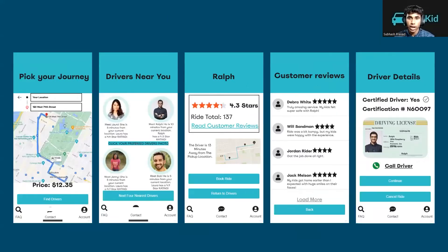When booking a ride, users can input details about their journey and receive a price estimate. After pressing Find Drivers, potential nearby drivers with short descriptions will pop up. Click on any of the drivers to view ratings, reviews, and location data. After booking a ride, more driver details will be shown to further reassure the customers of their credibility. They will also have the option to call the driver if they choose to.